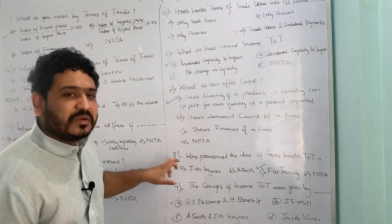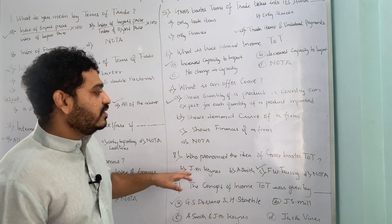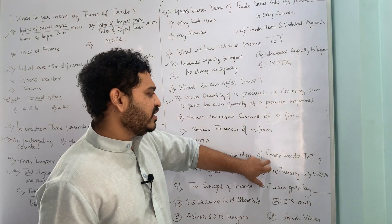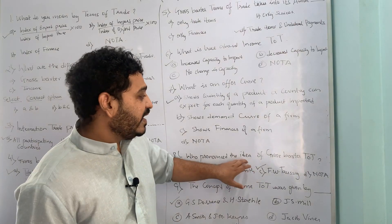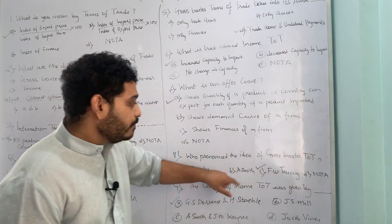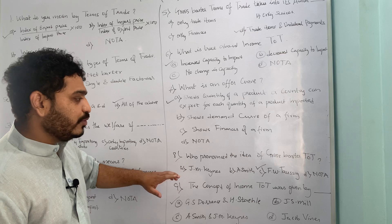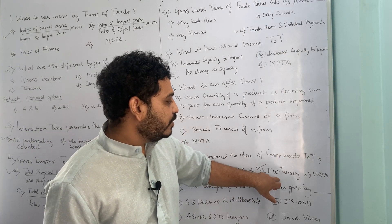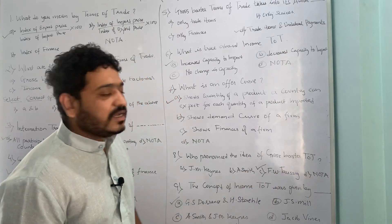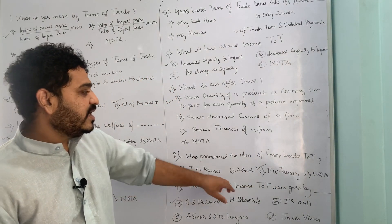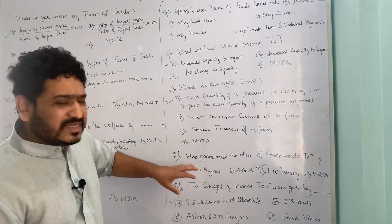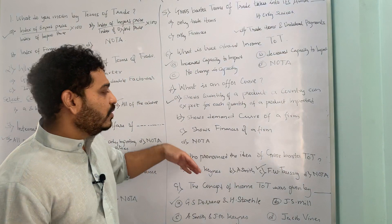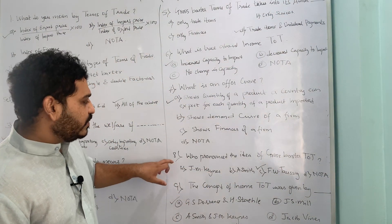The eighth question asks who propounded the idea of gross barter terms of trade. The options are: (A) John Maynard Keynes, (B) Adam Smith, (C) F.W. Taussig, (D) none of the above. The correct answer is C — F.W. Taussig. Please pay attention to the names of economists, as the exam may ask about them.